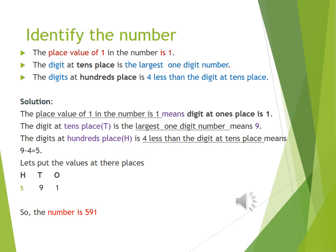Identify the number. The place value of 1 in the number is 1, means the digit at 1's place is 1. The digit at 10's place is the largest 1 digit number. The largest 1 digit number is 9, that means at 10's place we have to put 9.